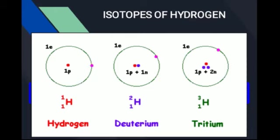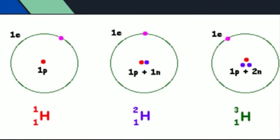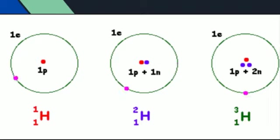پہلا isotope protium — اس میں ایک electron اور ایک proton ہے، کوئی neutron نہیں — لکھنے کا طریقہ: ¹H₁۔ دوسرا isotope ²H₁ — اس میں ایک electron، ایک proton اور ایک neutron ہے۔ تیسرا isotope ³H₁ — اس میں ایک electron، ایک proton اور دو neutrons ہیں۔